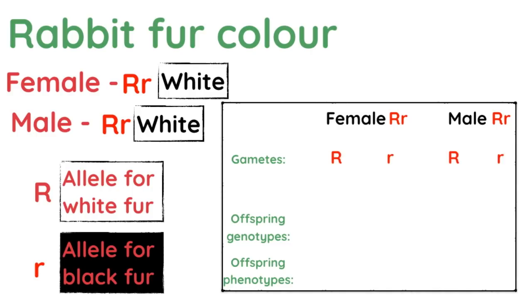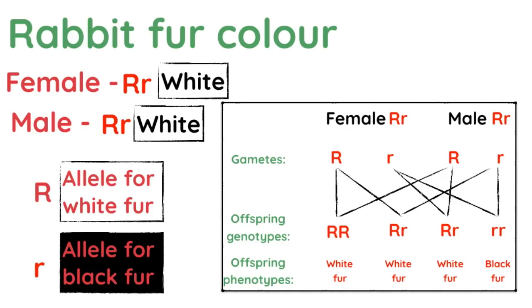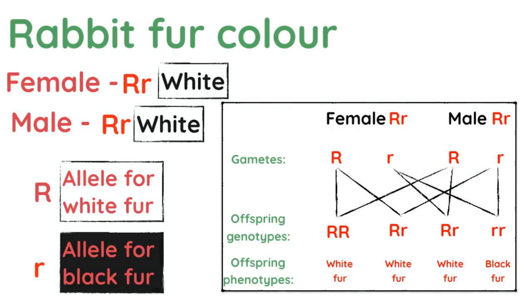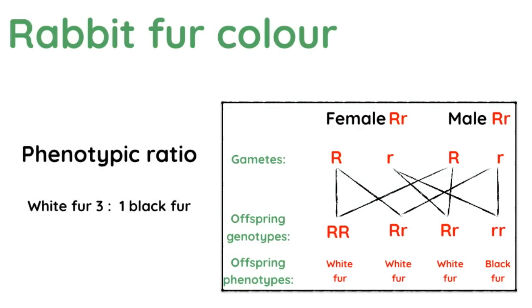To find all possible combinations, we first write out all possible gametes — the two that could come from the female and two from the male. Then we zigzag to find all the different ways the male and female gametes could combine. The offspring genotypes are then easy to figure out. Three out of four offspring would have white fur, and one would have black fur — a 75% chance of white fur. This gives us a phenotypic ratio of white to black of three to one.